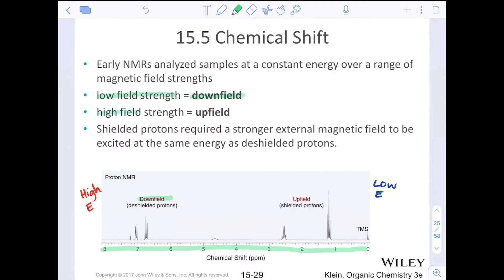High field strength are what we call upfield. These are more shielded protons. These would be things that have a greater magnetic force acting on them because they are looking at having more electrons around the nuclei. And so the magnetic field can't get in there to affect them as easily. Shielded protons require a stronger magnetic field to excite at the same energy as deshielded protons do.